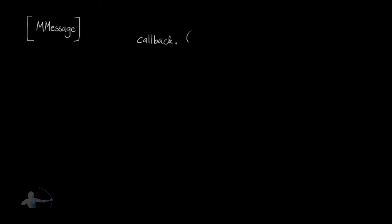The base class you will use to create message callbacks is MMessage. The classes for creating different other callbacks are derived from this MMessage class. The generalized format of creating a callback is: we specify what kind of callback it is, and in the parameter list we pass at what event we want to execute, and which function we want to execute.